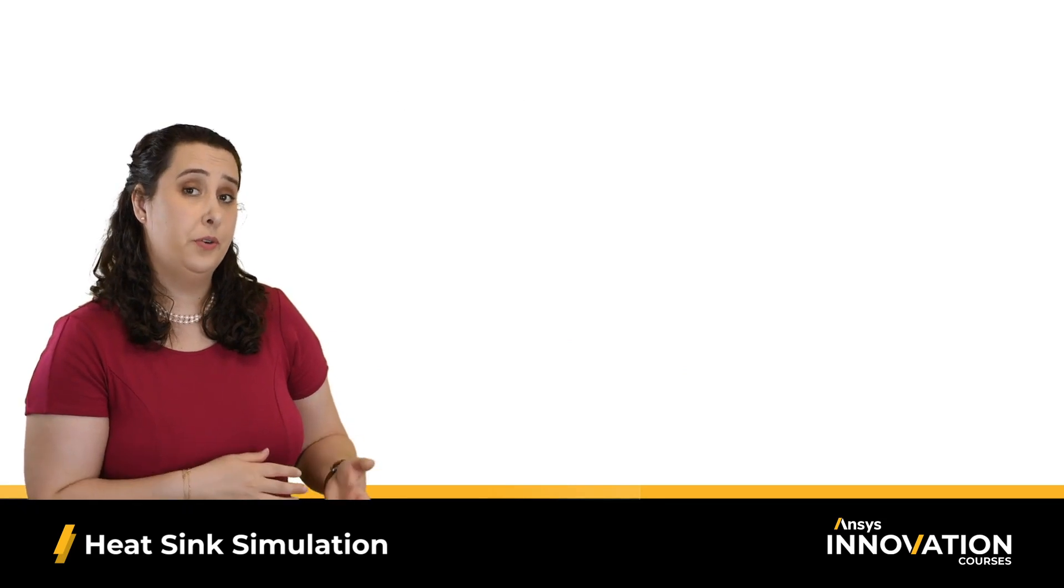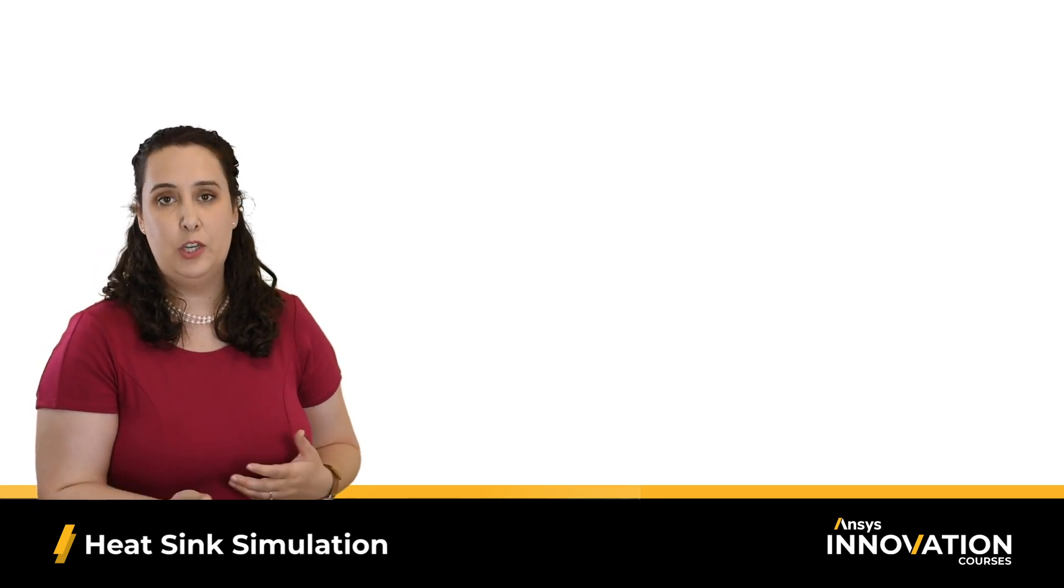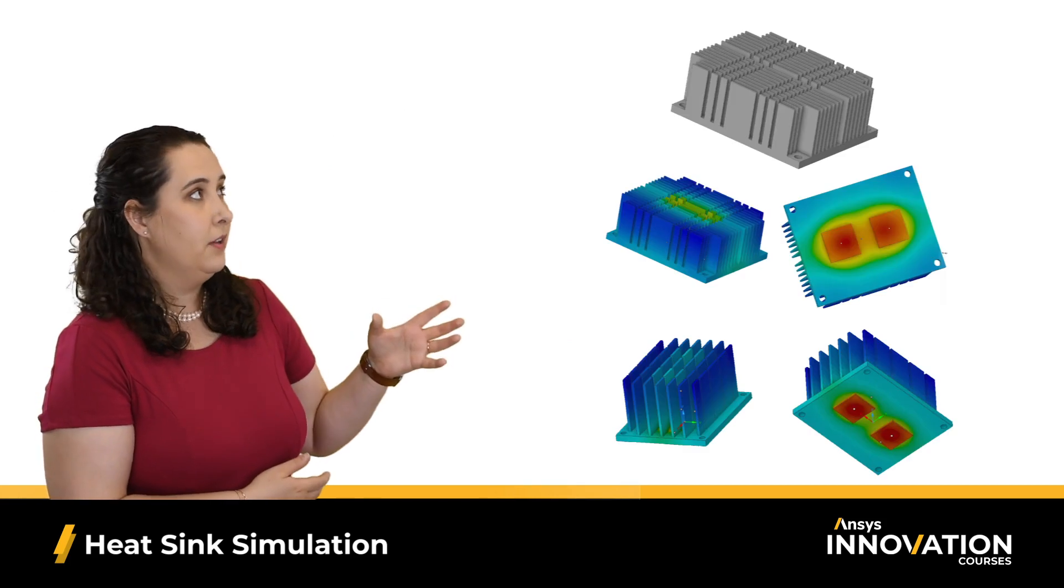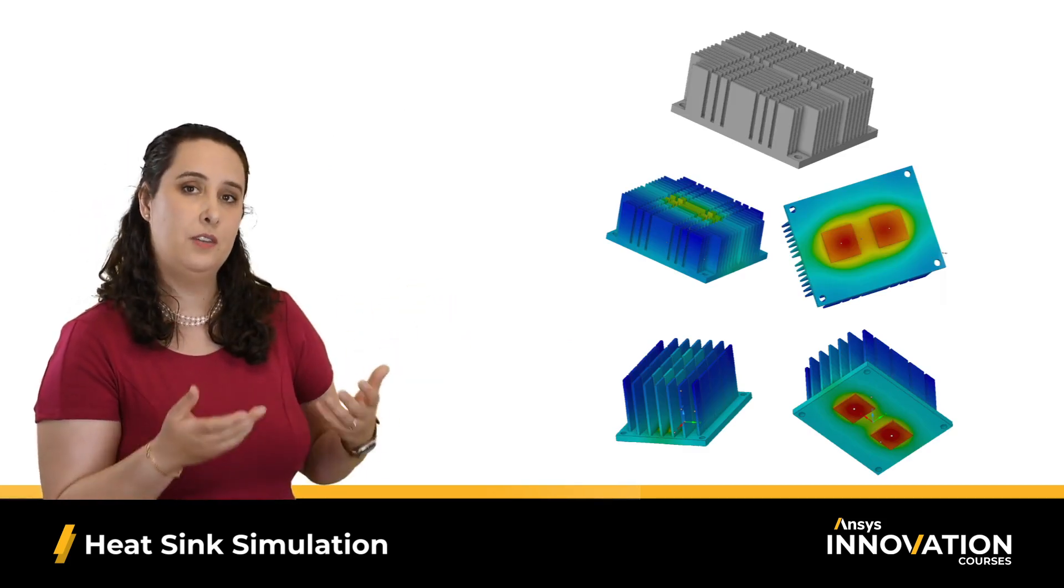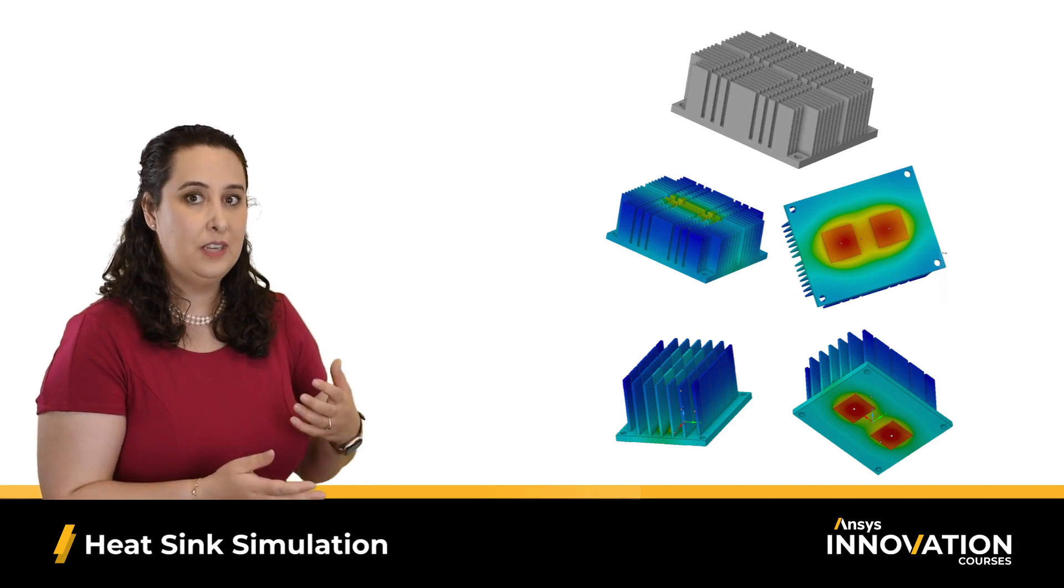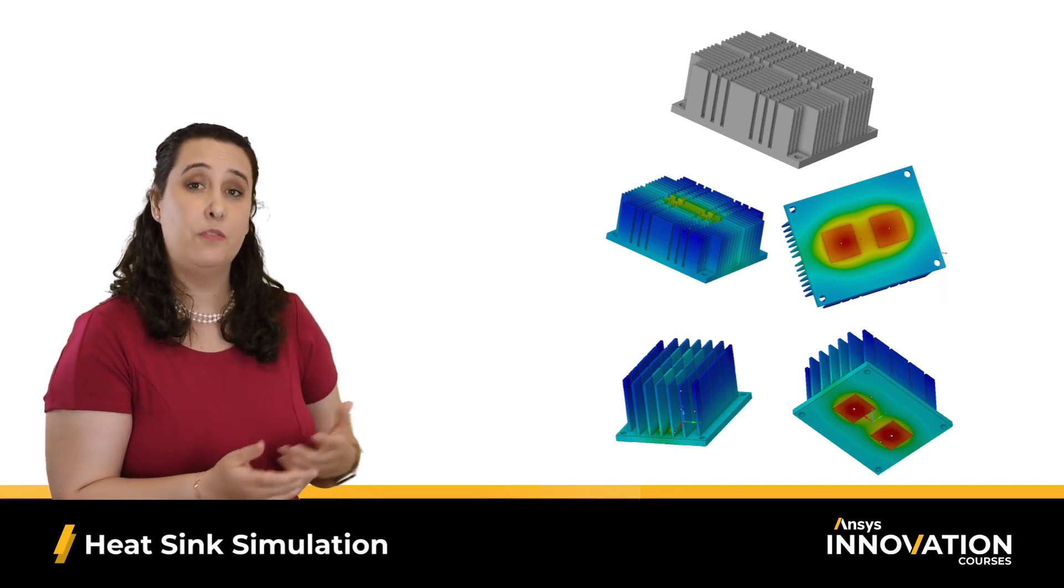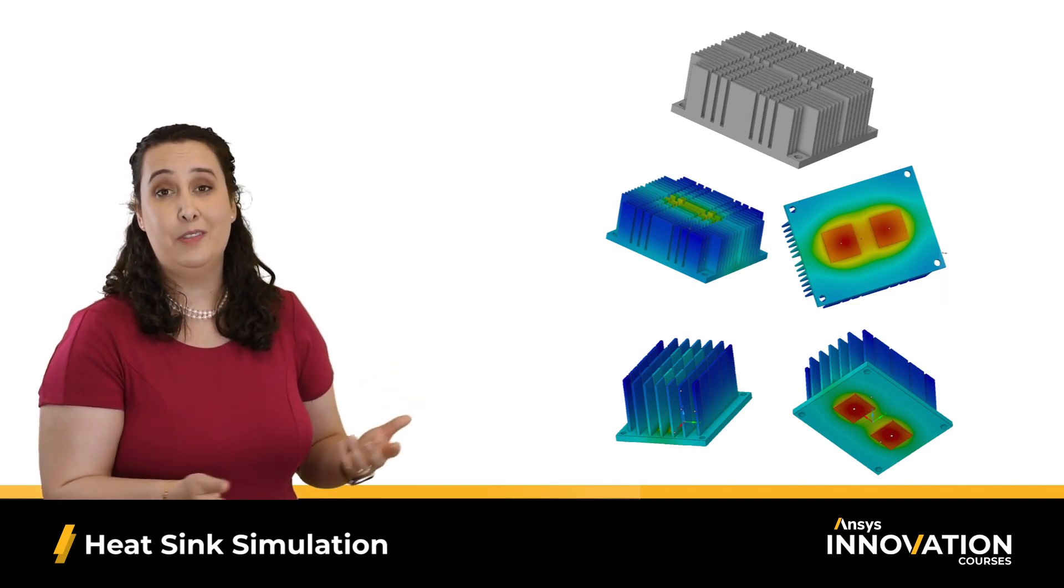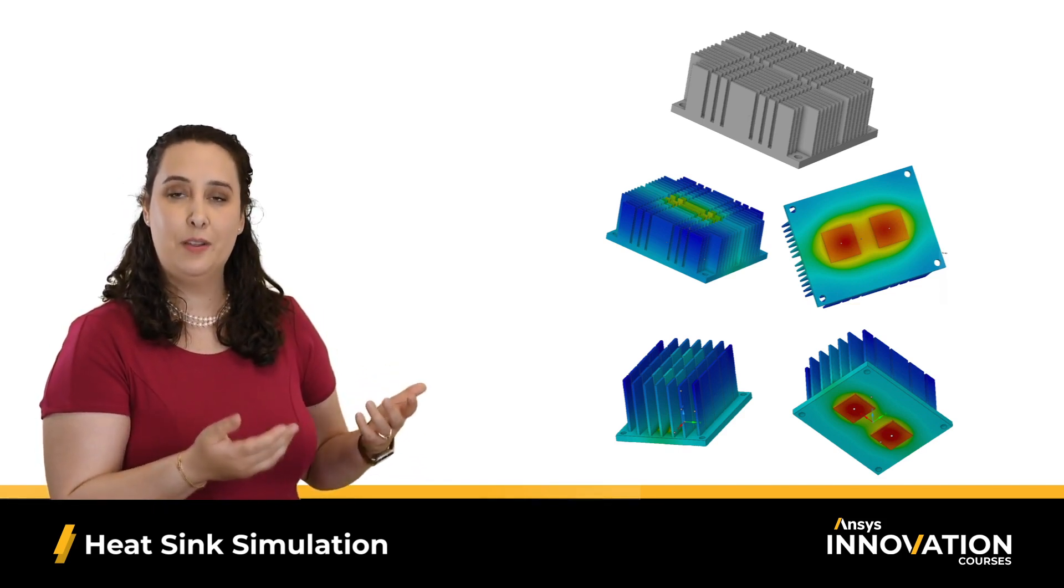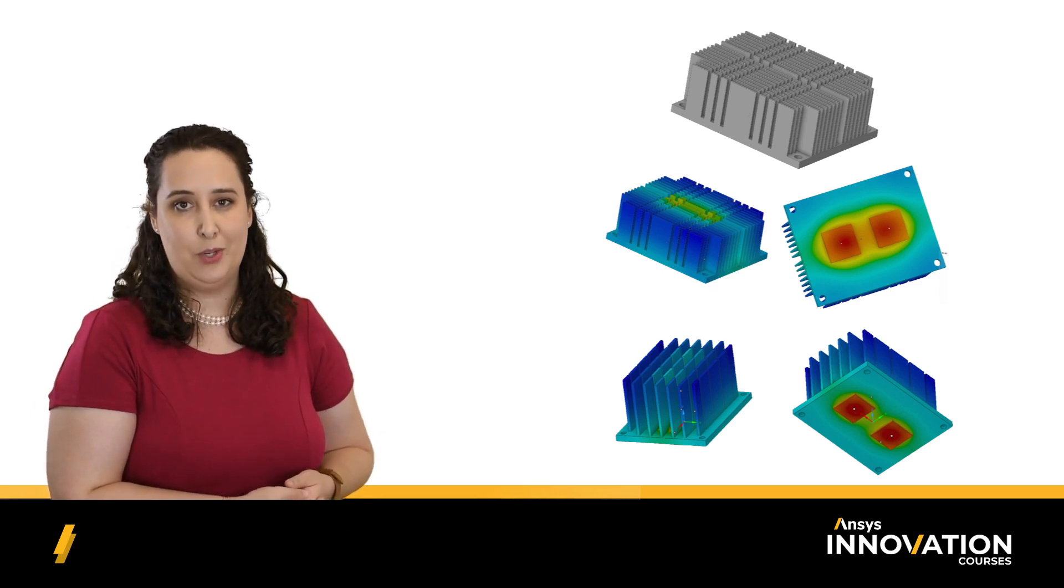Now that we have our material chosen, we can move on to simulation to optimize our structure. We can see on the screen here, various thermal simulations have been run on different geometries of heat sinks. We can see that by altering the shape and the number of fins, we're getting different results. So by iteratively running our simulations, we'll be able to optimize the structure and achieve our design objectives.